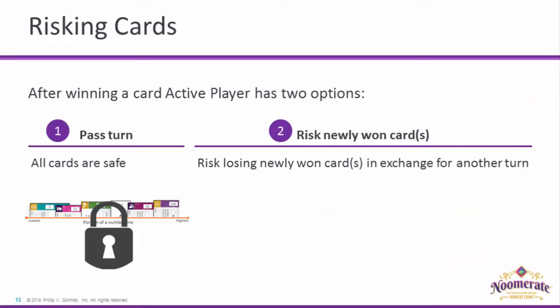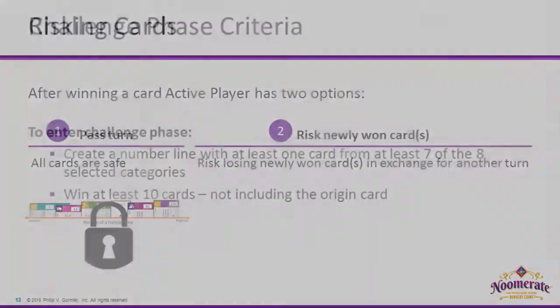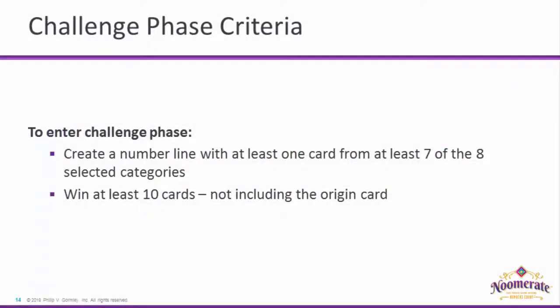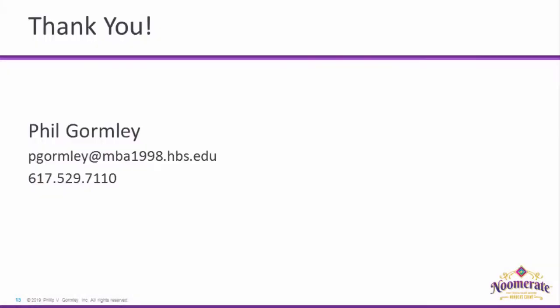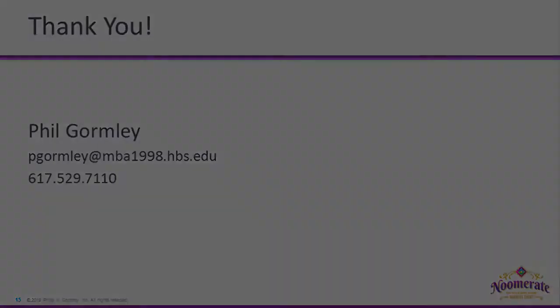Each player proceeds in this manner until they become a challenger. To enter the challenge phase, a player must both create a number line with at least one card from at least seven of the eight categories and win at least ten cards, not including the origin card. If this is your first game, I recommend you play the game and watch Part 2 of this video when someone enters the challenge phase. Thank you for playing Numerate, and please contact me at any time with questions and feedback.